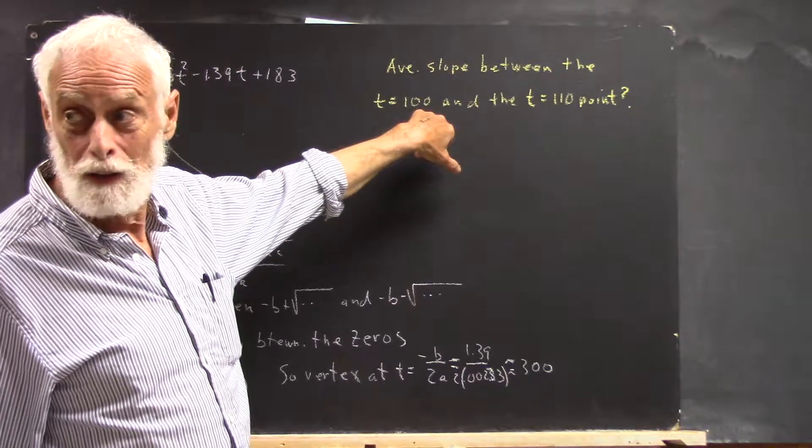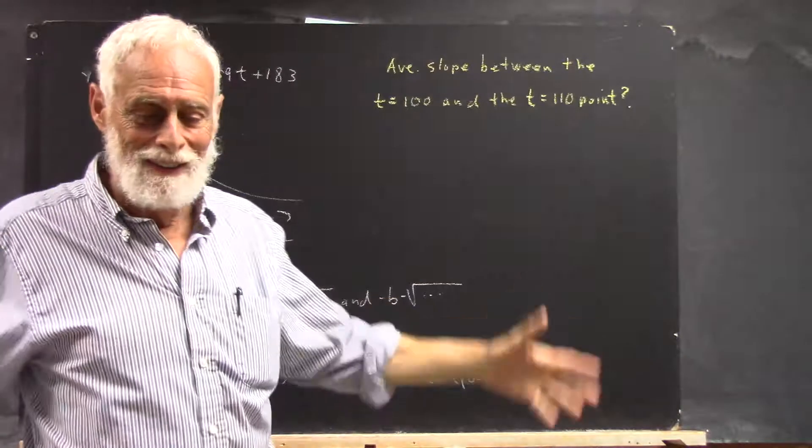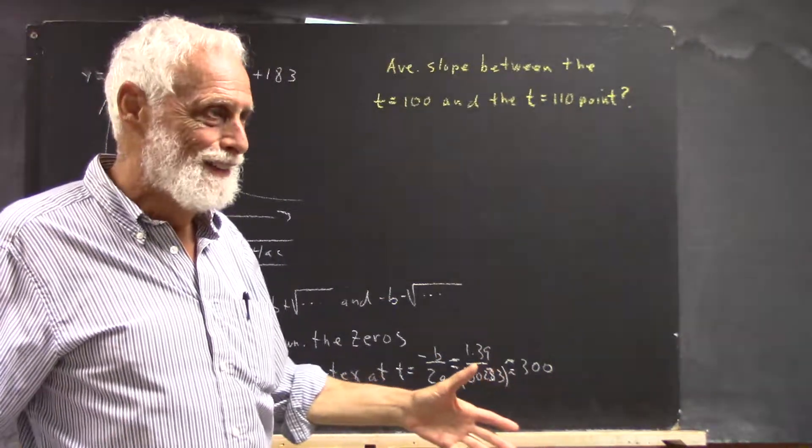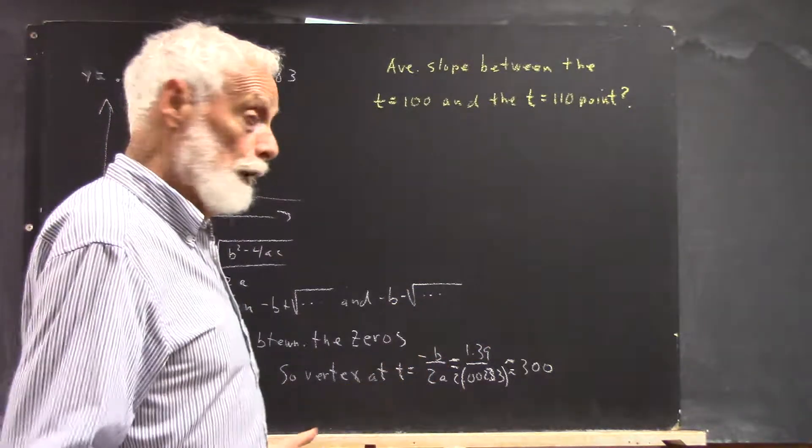And then you calculate the slope, not using a formula because a formula isn't understanding. You use rise divided by run. You figure out the rise, you figure out the run, you figure out the slope.